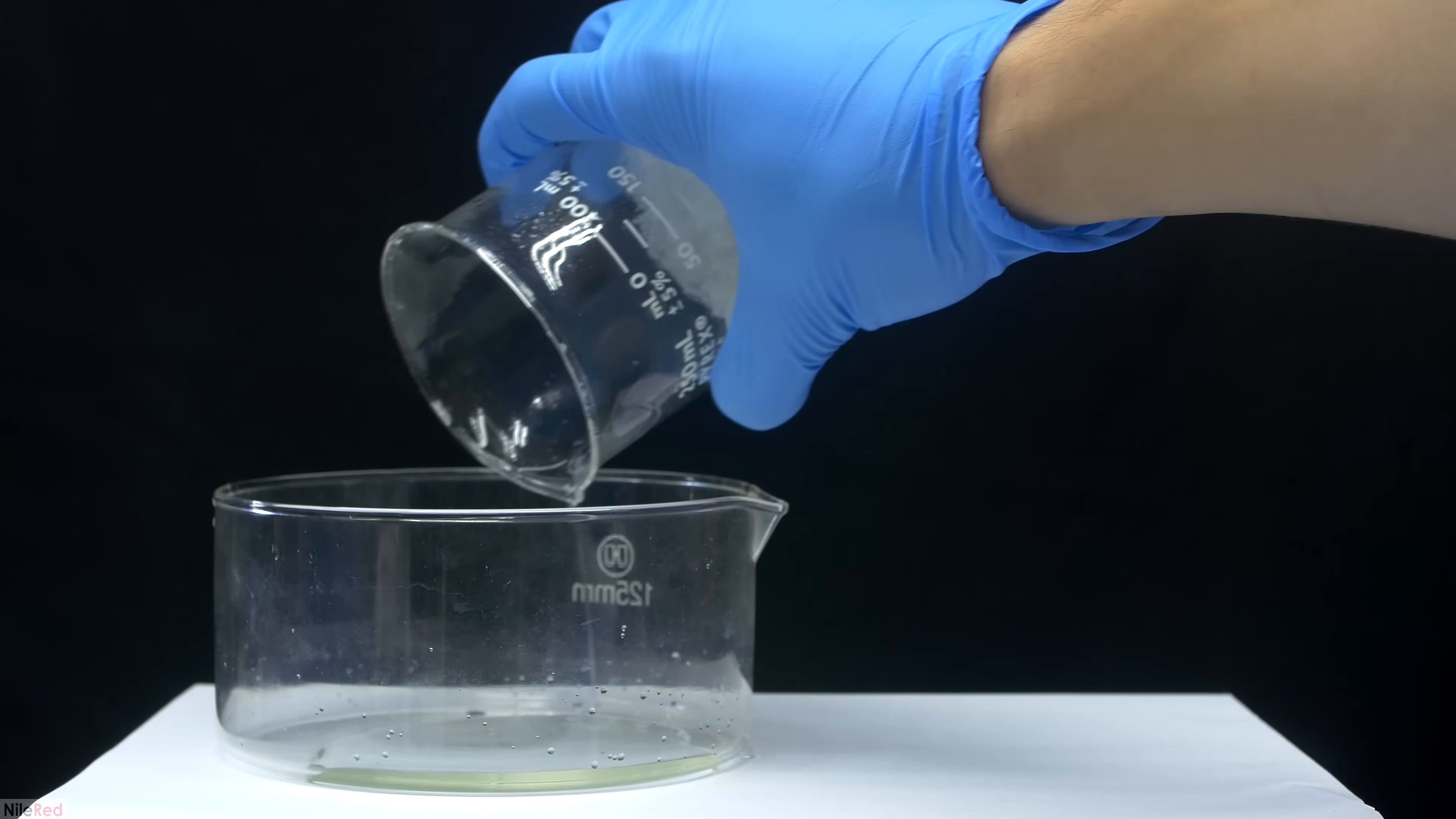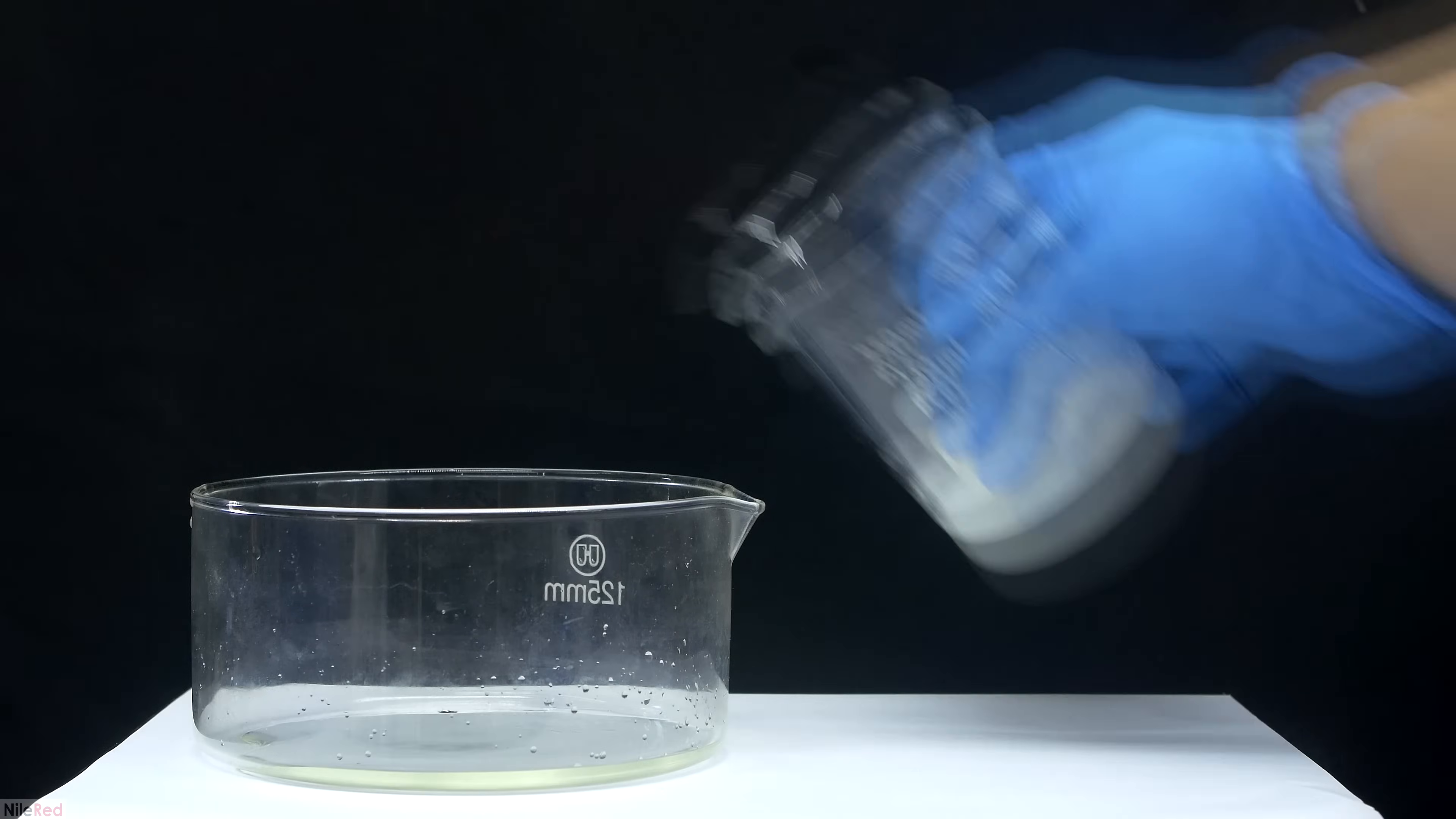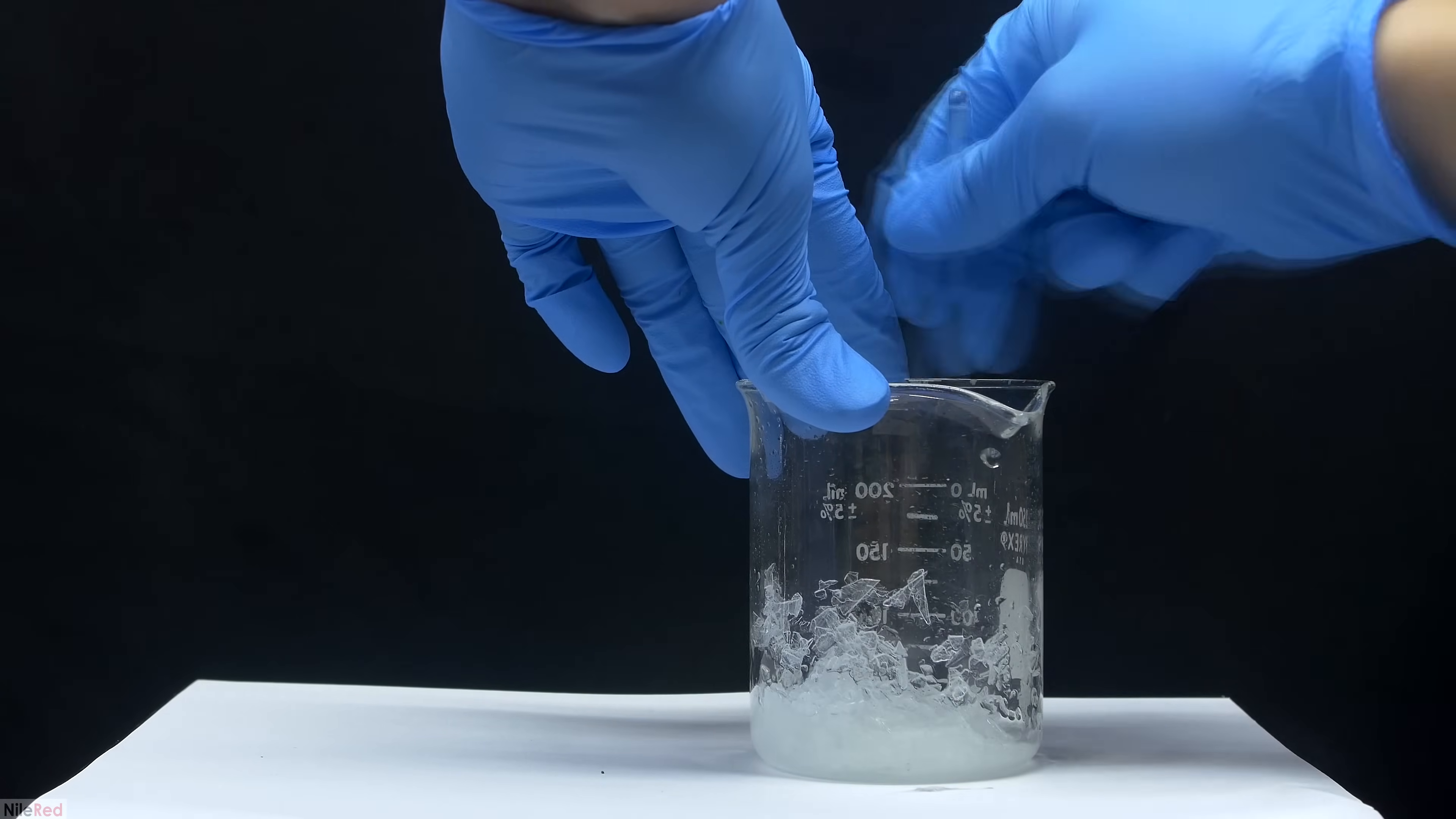The first thing that I did was dump out any excess liquid. I then placed the beaker on the side, let more liquid pool at the bottom and then I dumped that out as well. When it seemed like most of the water had been poured off, I used a glass stir rod to break up the crystals.